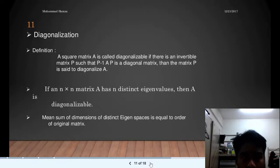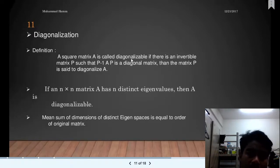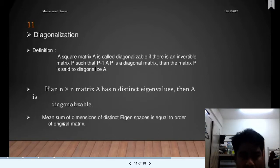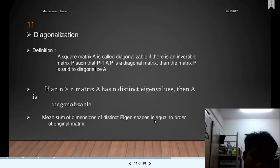Next, we go to diagonalization. Definition: A square matrix A is called diagonalizable if there is an invertible matrix P such that P inverse A P is a diagonal matrix. The matrix P is said to diagonalize A. If an n by n matrix A has n distinct eigenvalues, then A is diagonalizable. It means the sum of dimensions of the eigenspaces equals the order of the matrix.